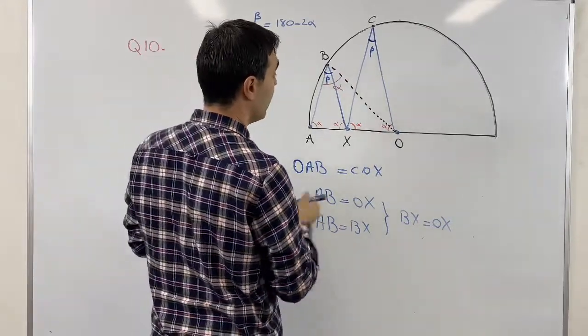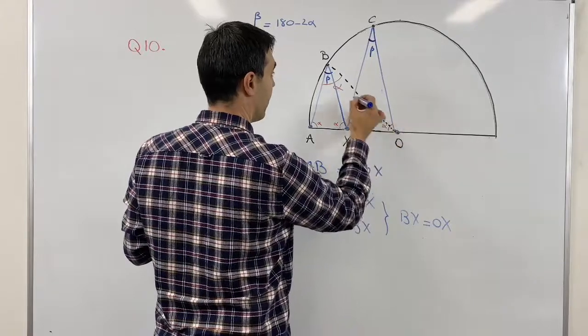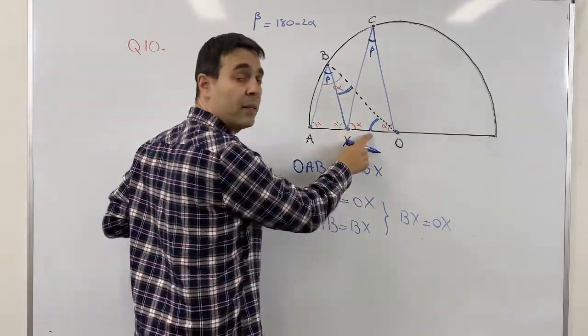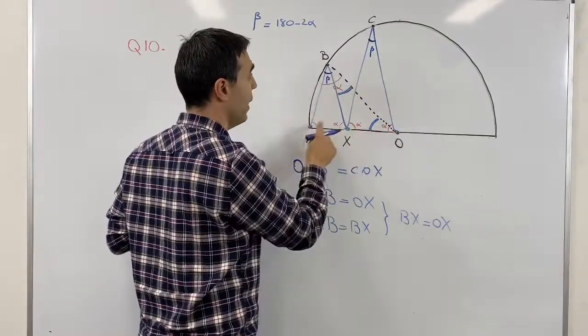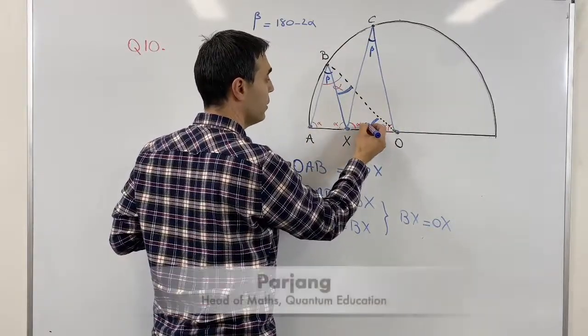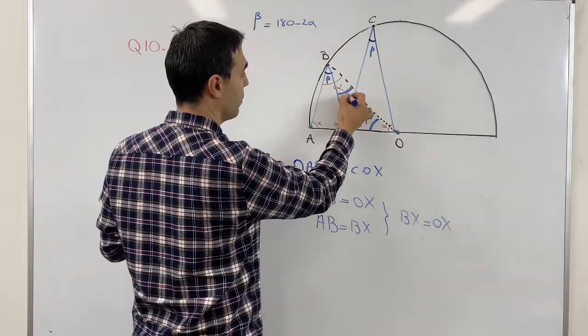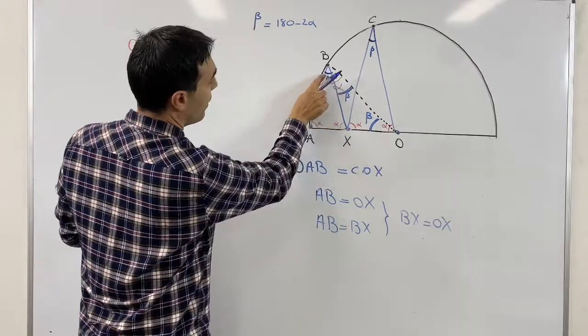O is same as this angle, and this angle is actually beta because angle BOA is same as XO. Okay, so this becomes beta and this becomes beta. Now looking at this, we know that 2 beta is alpha.